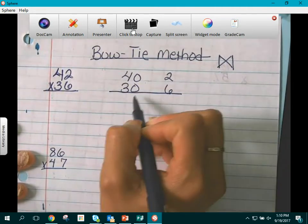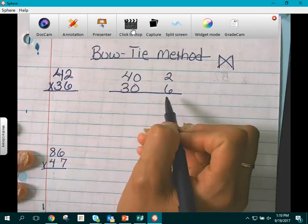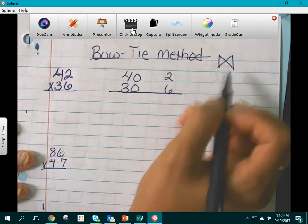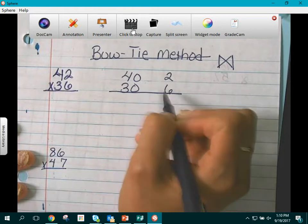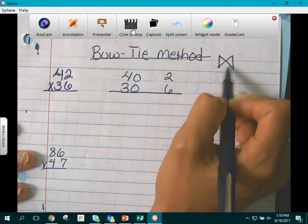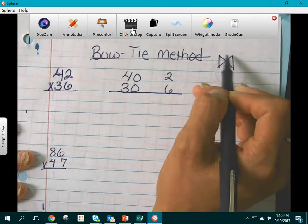Students will put an equal bar underneath the numbers. They can begin either way that they would like. The end goal is that they are going to create a Bow-Tie in calculation.